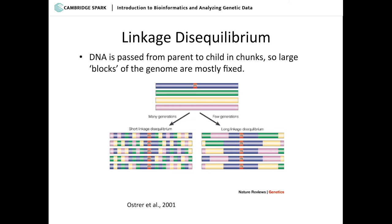Over a long time, these blocks get degraded through something called crossing over, where they switch and break up those blocks. This is useful in genome-wide association studies because if you've tagged a particular site, and you know the block it's in, you can guess everything in between. You don't have to sequence the entire block because you can impute — using population data from a large whole-genome-sequenced population to fill in all the blank space. You make a few errors on the fringes, but it allows you to get a lot of pretty good data for free.